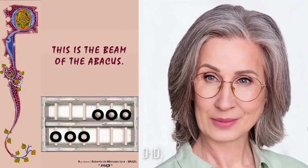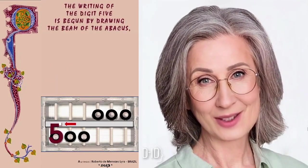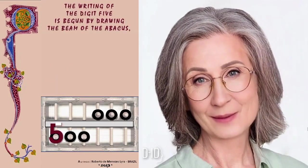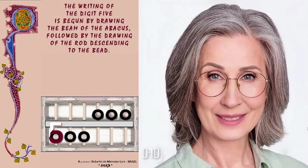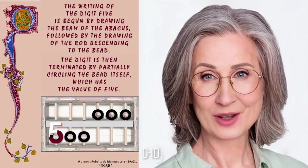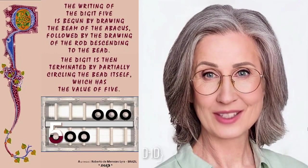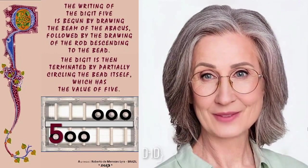This is the beam of the abacus. The writing of the digit 5 is begun by drawing the beam of the abacus, followed by the drawing of the rod descending to the bead. The digit is then terminated by partially circling the bead itself, which has the value of 5.